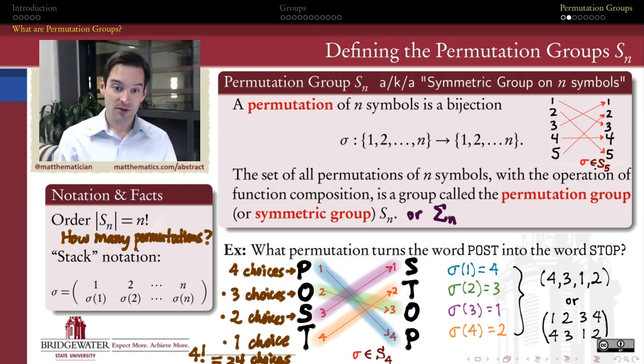The next question is going to be how to develop cycle notation. So how do we use an even more compact notation to express permutations?